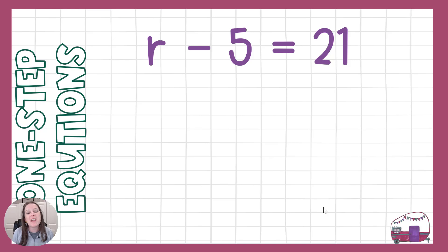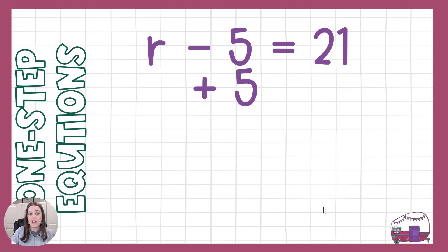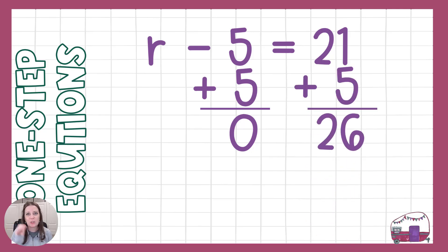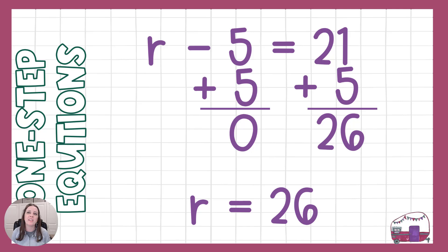Alright, r minus 5 equals 21. We're trying to get r all by itself. The opposite of minus 5 is plus 5. Those are opposite pairs — together they make 0. Going to the other side to do the same thing and keep everything the same. 21 plus 5 is 26, so r equals 26. And I can plug that back in: 26 minus 5 is in fact 21.